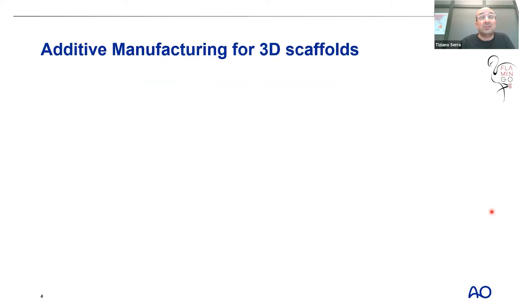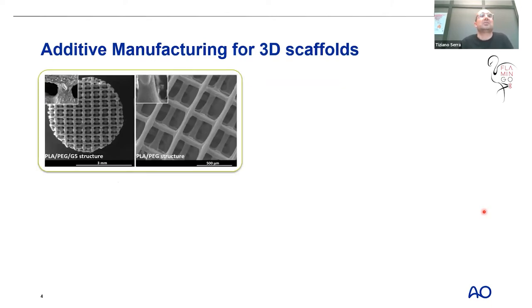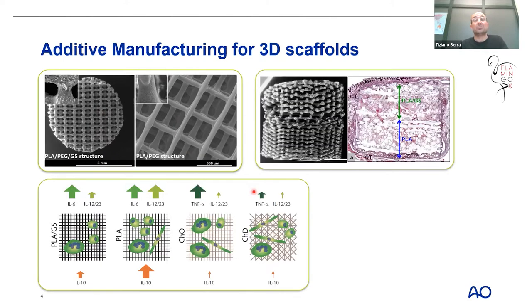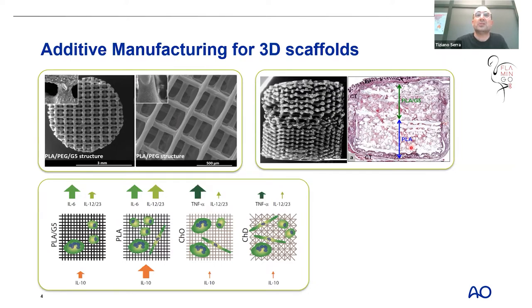There is another family, which is the additive manufacturing of 3D scaffolds. These porous constructs can be infiltrated by cells and extracellular matrix, and after cell proliferation, the scaffold can be cultured in vitro or implanted directly in vivo to regenerate new tissue. This scaffold was implanted subcutaneously in a small animal, and after a few weeks we can see vascularization and new matrix formation. Over weeks and months, the scaffold degrades as tissue regenerates.